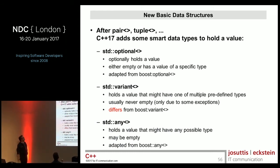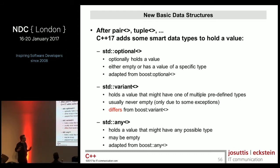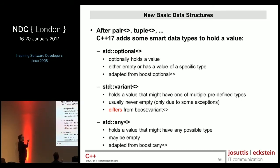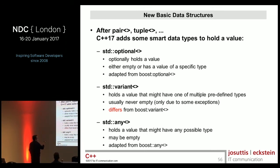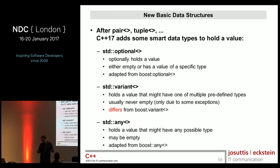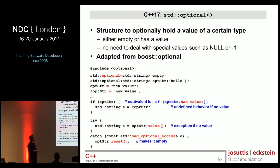We have other new basic data structures: optional, variant, and any. If you come from Boost you might have heard them all, but beware — optional and any are like in Boost, but variant is significantly different. Optional means we optionally hold a value — you can transfer value semantics to reference semantics so that we can say there's nothing. Variant means we have multiple predefined types and our value can hold at one moment one of those predefined types. Any means you don't define in advance which types are possible — you can hold anything.